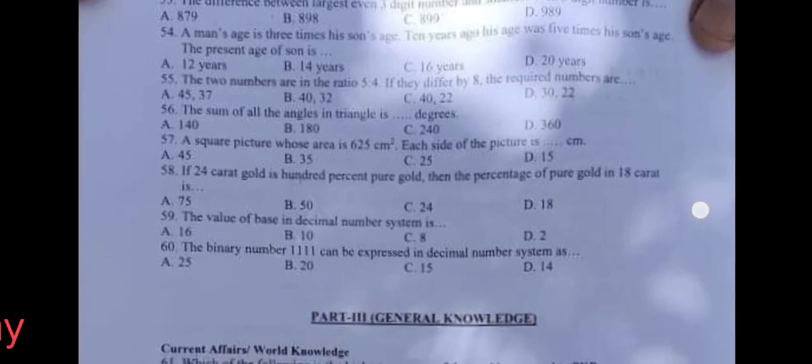Question number 56: The sum of all the angles in triangle is 180 degree. Correct option is B. Question number 57: A square picture whose area is 625 cm square, each side of the picture is dash cm. The correct answer is C, 25 cm.